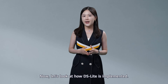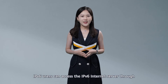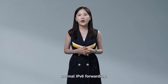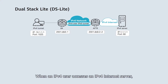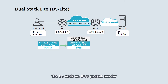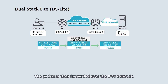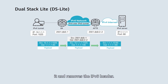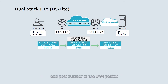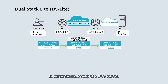Now let's look at how DS-Lite is implemented. IPv6 users can access the IPv6 internet server through normal IPv6 forwarding. When an IPv4 user accesses an IPv4 internet server, the B4 adds an IPv6 packet header to the IPv4 packet. The source address in the IPv6 packet header is the B4 address, and the destination address is the AFTR address. The packet is then forwarded over the IPv6 network. After receiving the packet, the AFTR decapsulates it and removes the IPv6 header, then translates the private network address and port number in the IPv4 packet into a public network address and corresponding port number to communicate with the IPv4 server.